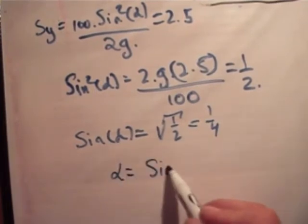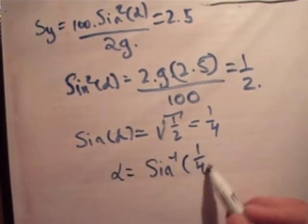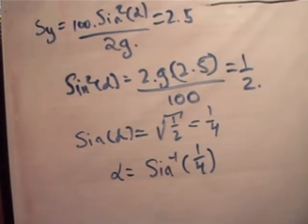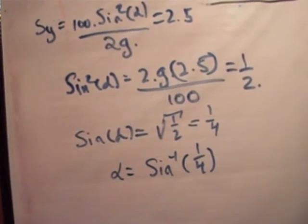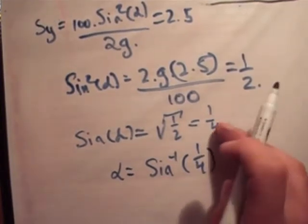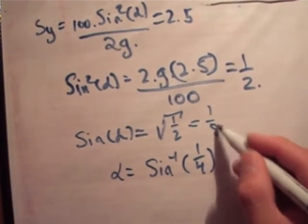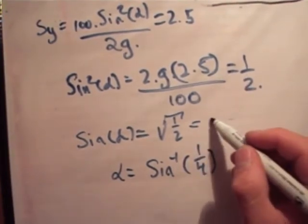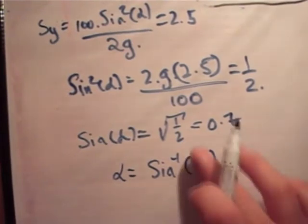Therefore alpha is equal to the inverse sine of a quarter. Is that right? Just one sec... oh yeah, half, 0.49, an eighth - sorry, it's not a quarter, that's an eighth, that's pretty ridiculous. So it actually turns out to be 0.7, sorry about that.